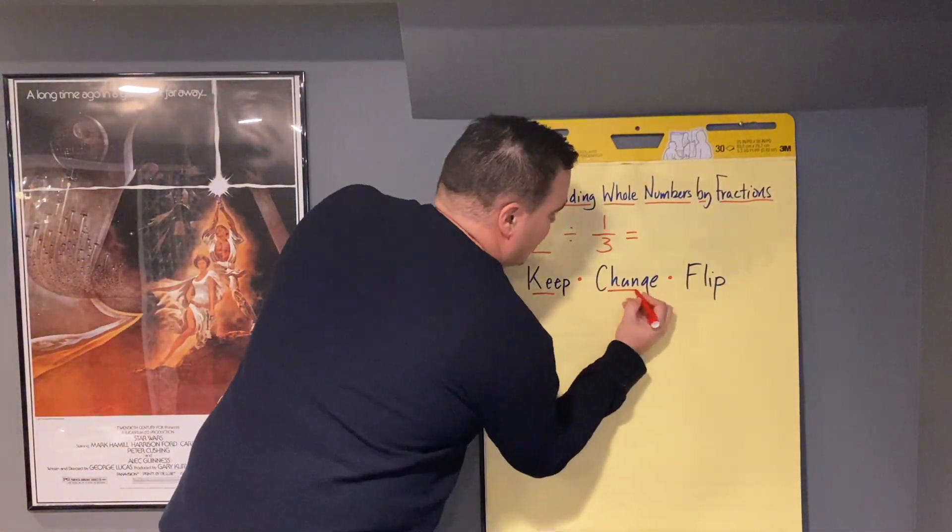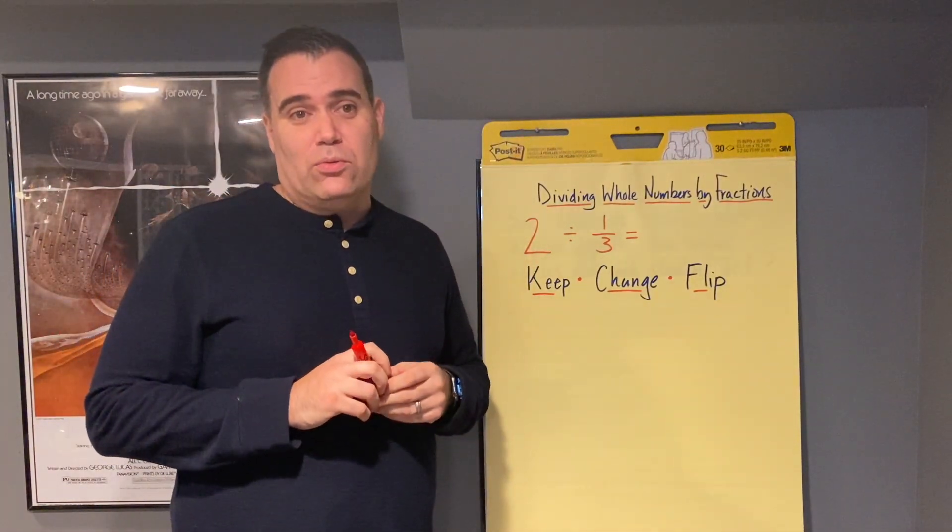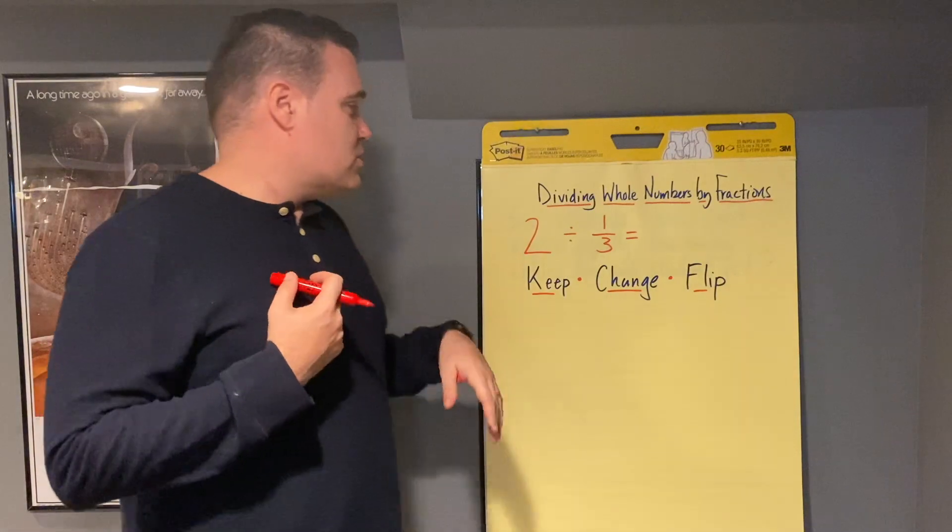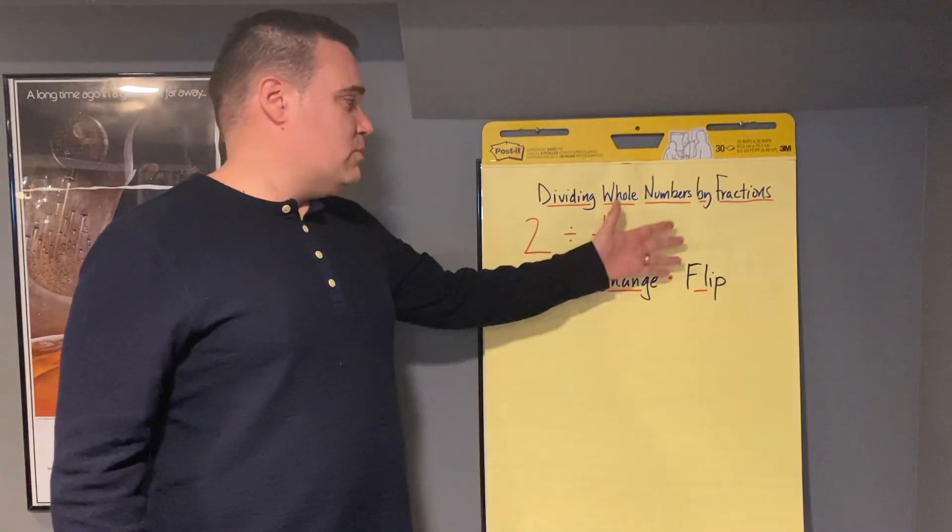Keep, change, flip. Because that is the whole key to knowing how to do these types of problems. So let's look. We have 2 divided by 1 third equals something.